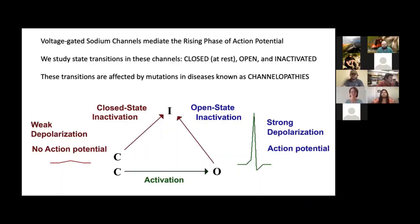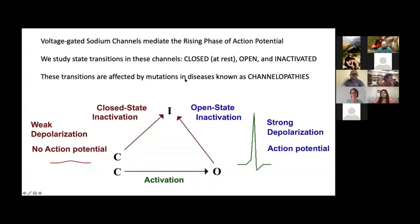I refer to this as the Toblerone model, where voltage-gated sodium channels go from a closed state — when membrane potential is very negative and the cell is at rest — then in response to a more positive potential, they activate or open, and then inactivate. In some cases, channels inactivate directly from closed states without opening — those are the three tiers of the Toblerone. Opening is associated with strong depolarization and action potentials. Closed-state inactivation is a focus of our lab because we think it is a target in disease, even though there's no action potential associated with it.